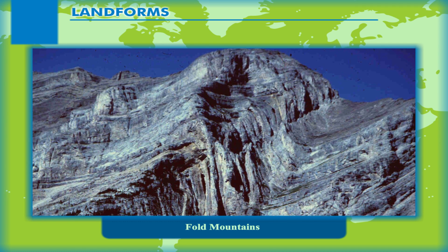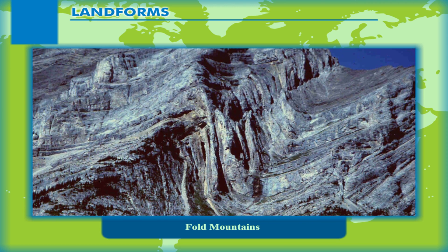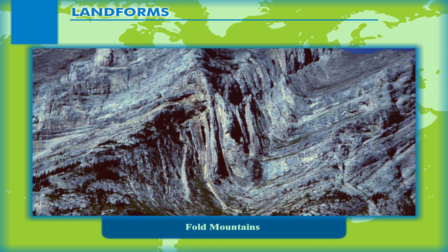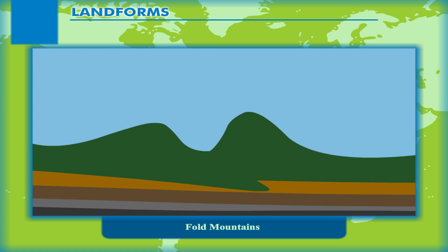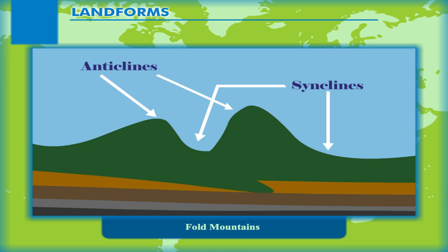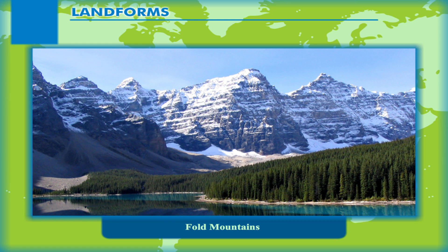As a result of the tectonic forces, fold mountains are formed by the horizontal forces of compression. Due to compression, the horizontal rock strata crumbles into a series of upward and downward folds called anticlines and synclines respectively. As most of the mountains are formed in the recent period of geological history, they are also called Young Fold Mountains.